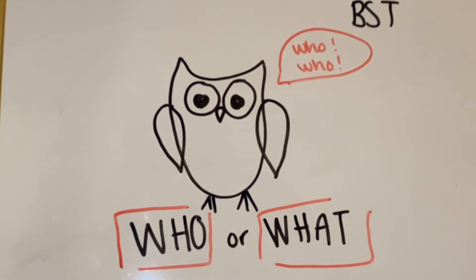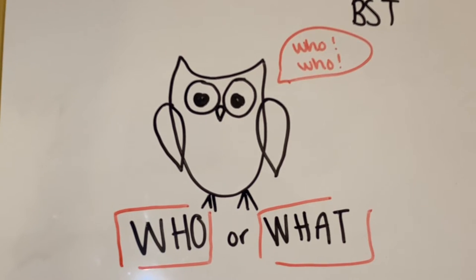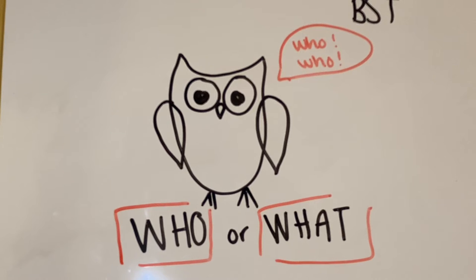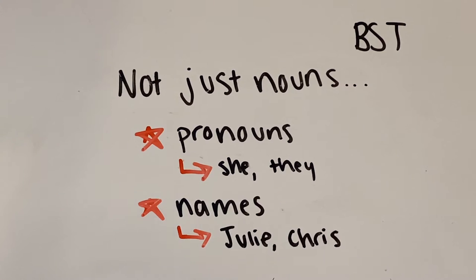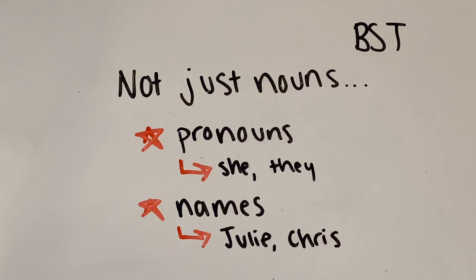So what is the subject? Great question. Thanks for asking. The subject is the who or what that is being discussed or performing actions in a sentence. The subject doesn't have to just be plain nouns like an apple or a horse. It could also be pronouns such as she or they, or it could be names like Julie or Chris. No matter what, the subject indicates a person, place, or thing that is being discussed or performing an action in a sentence.